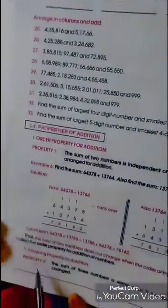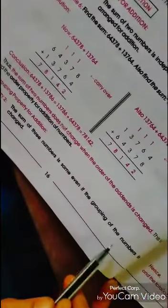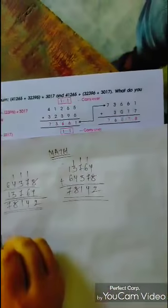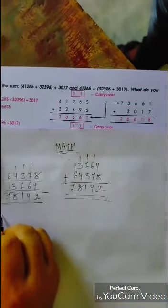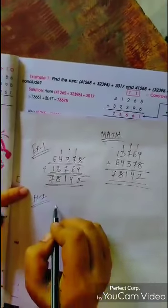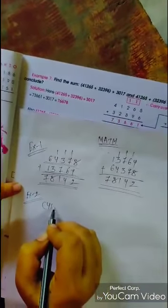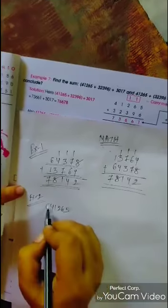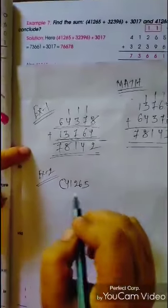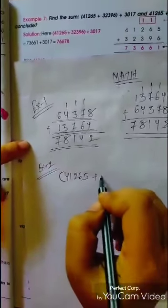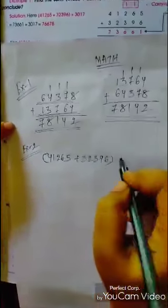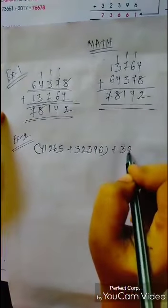Now come to Property 2. The sum of 3 numbers is the same even if the grouping of the numbers is changed. For example, the numbers are like (41,265 + 32,396) + 3,070, and another grouping is 41,265 + (32,396 + 3,017).